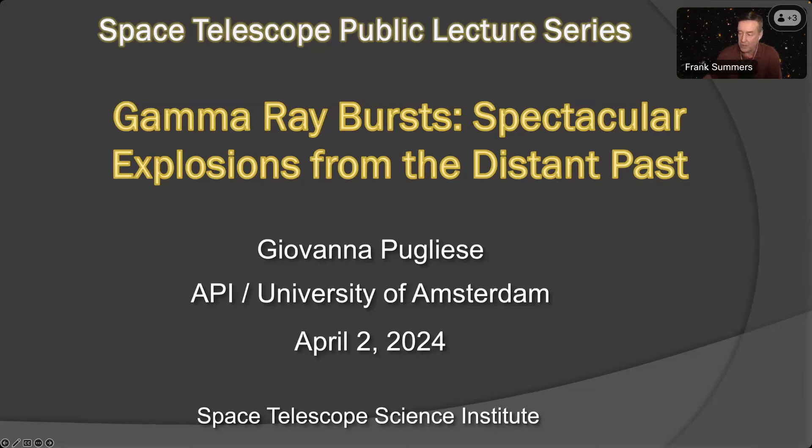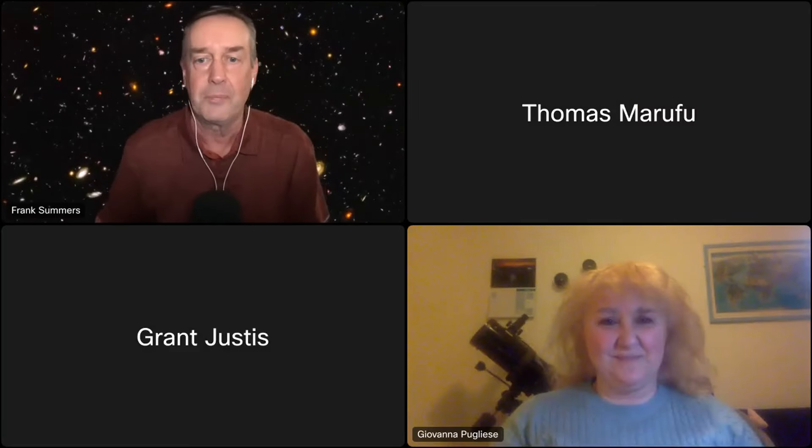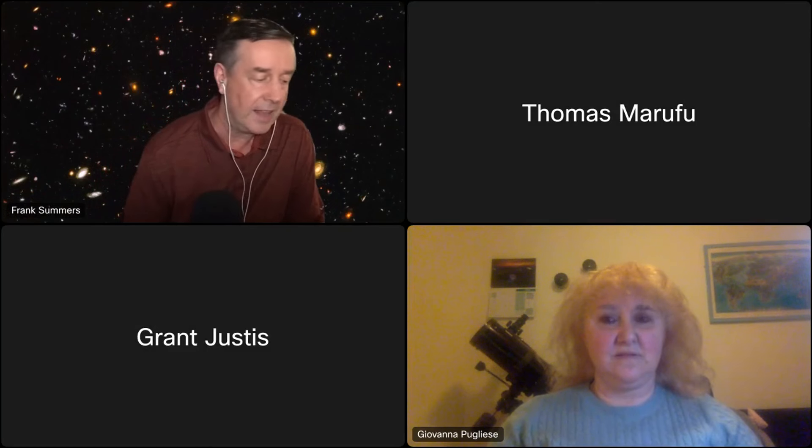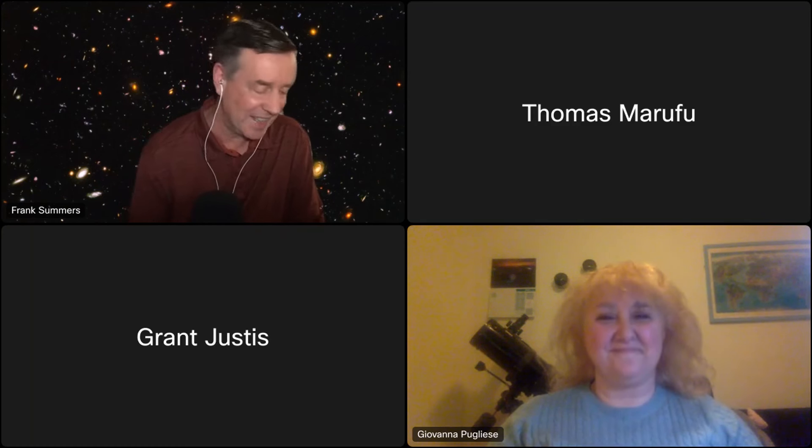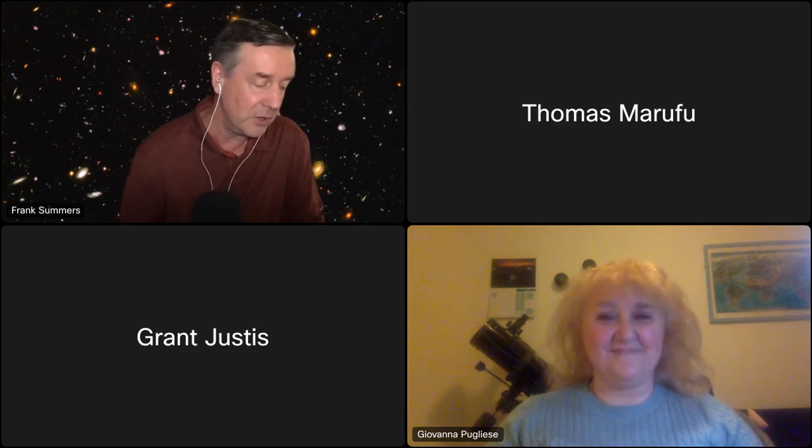Our speaker tonight is Giovanna Pugliese, coming to us from the Netherlands where it's six hours later than Baltimore. Originally from Italy, she got her undergraduate degree at the University of Bologna, her master's in Rome, and her PhD in Germany at the University of Bonn and the Max Planck Institute for Radio Astronomy. She then did postdocs at UC Santa Cruz, the European Southern Observatory in Garching, Utrecht University, and Radboud University, before settling at the University of Amsterdam.